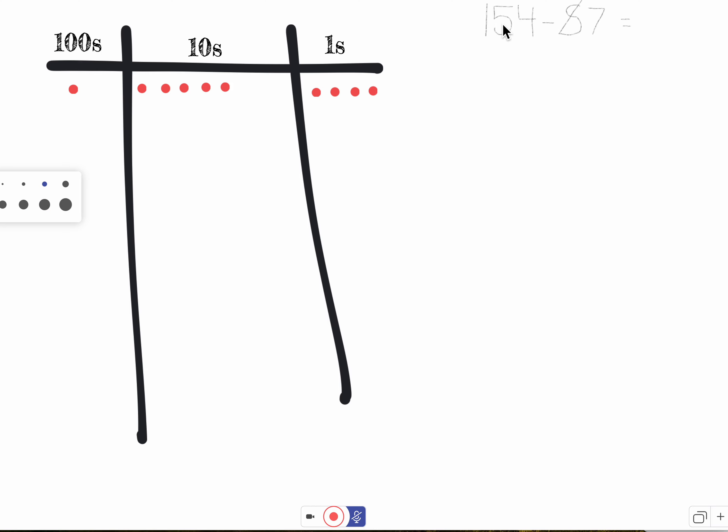I'm going to double check that this is true. So 154: 100, this five actually represents five tens, 50, and four.